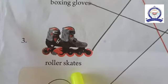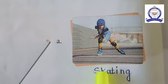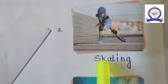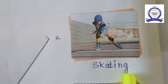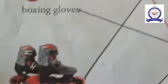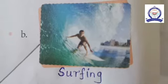The third one is roller skates. Roller skates are used in skating. The fourth one is a surfing board. A surfing board is used in surfing.